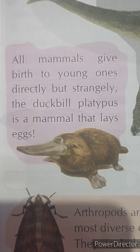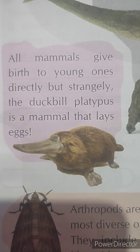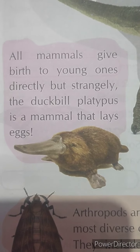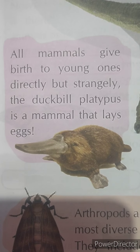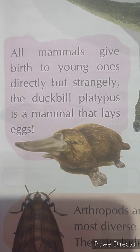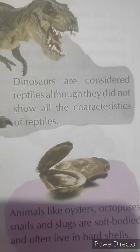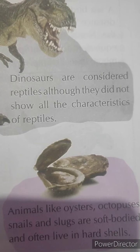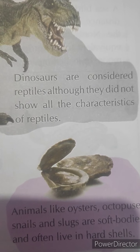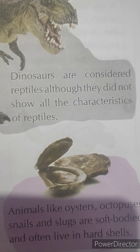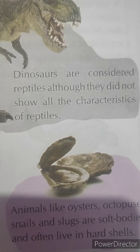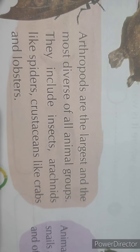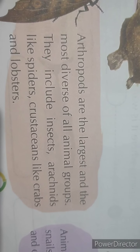Spiders look like insects but they are actually arachnids and have eight legs, unlike insects that have six legs. All mammals give birth to young ones directly, but strangely the duck-billed platypus is a mammal that lays eggs. Dinosaurs are considered reptiles although they did not show all the characteristics of reptiles.